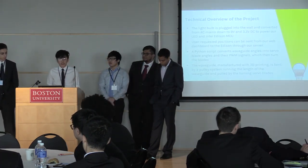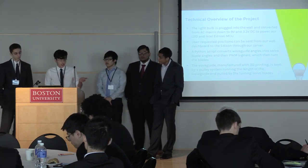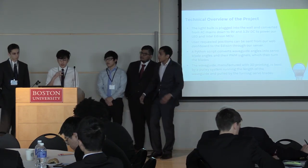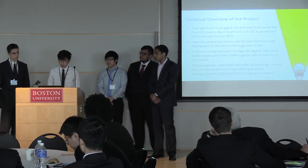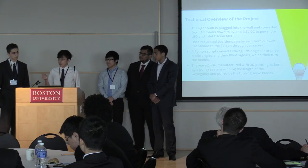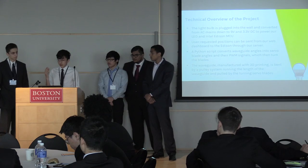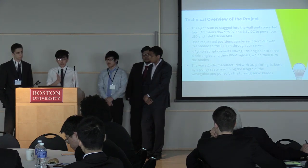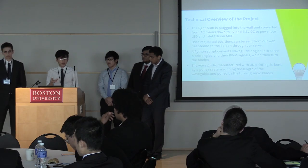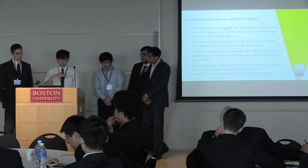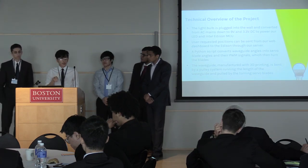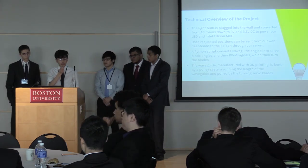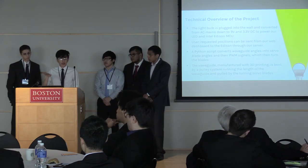The technical overview: the light bulb is plugged into the AC mains wall outlet, just like any other electrical device. Our system converts it down from AC mains to 9 volts and 3.3 volts DC to power our LED and our Intel Edison microcontroller. User-requested positions are sent via the web to our Edison through our server. A Python script on our Edison converts those user-requested directions into servo blade angles, and with PWM signals, changes the servo blades to those positions — which moves pulley systems within the bulb attached to a waveguide, redirecting the LED light to leave the waveguide at that angle.